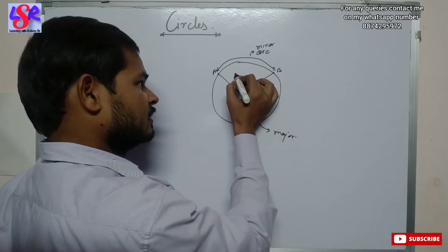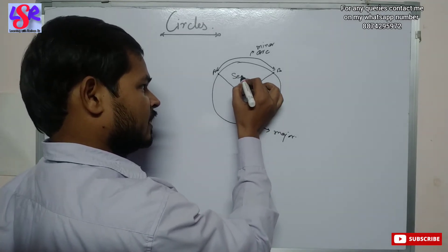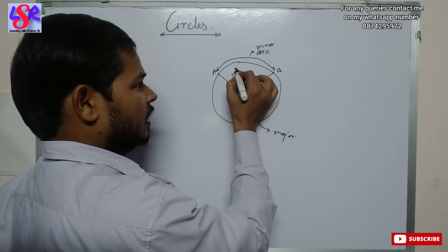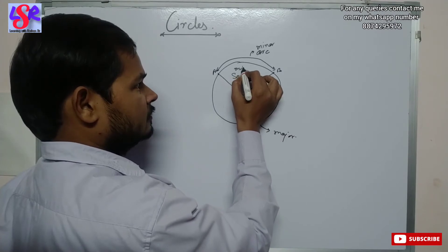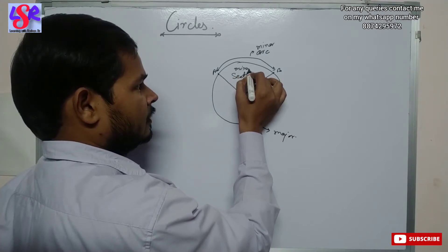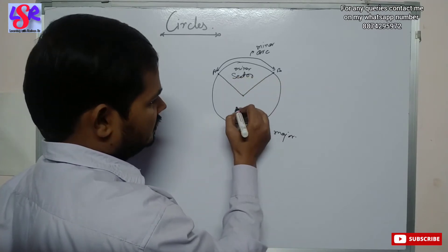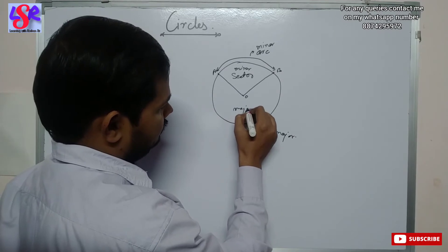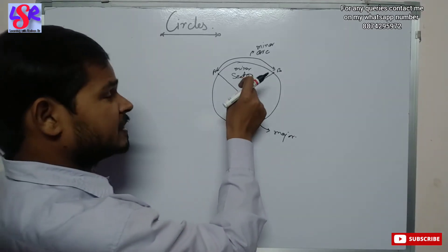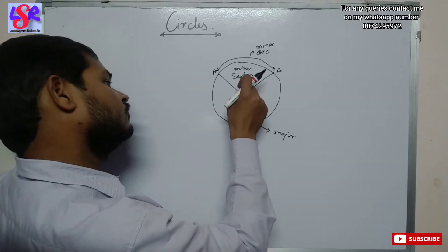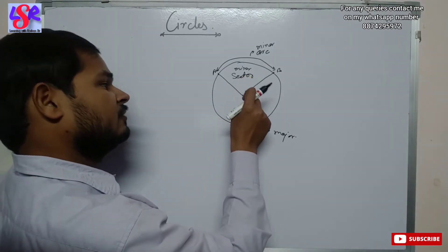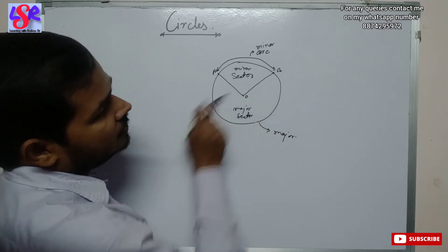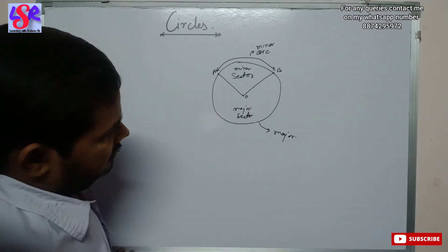If we draw two radii through the center, the region formed is known as a sector. This is the minor sector, and this region is known as the major sector. The sector is the region divided by a circle through the radius of the circle.